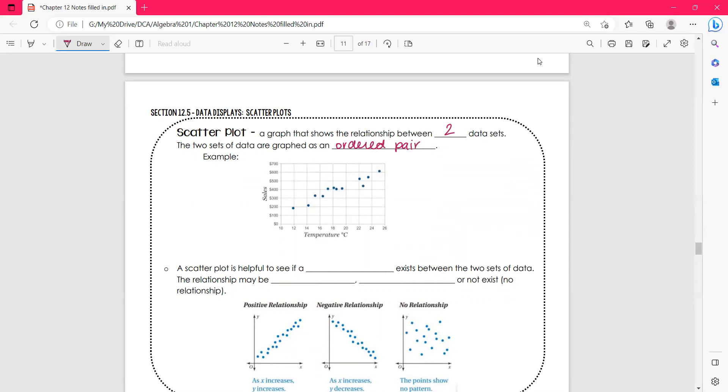Okay, so here's an example. This graph, we're measuring temperature and sales. There's no title here, but we're not really sure what it is. But I do want to just point out, this point represents 12 degrees Celsius. There were sales of $200. So those two sets of data go together. So when it's 12 degrees Celsius, they sold $200 in sales. That's how we read a scatter plot.